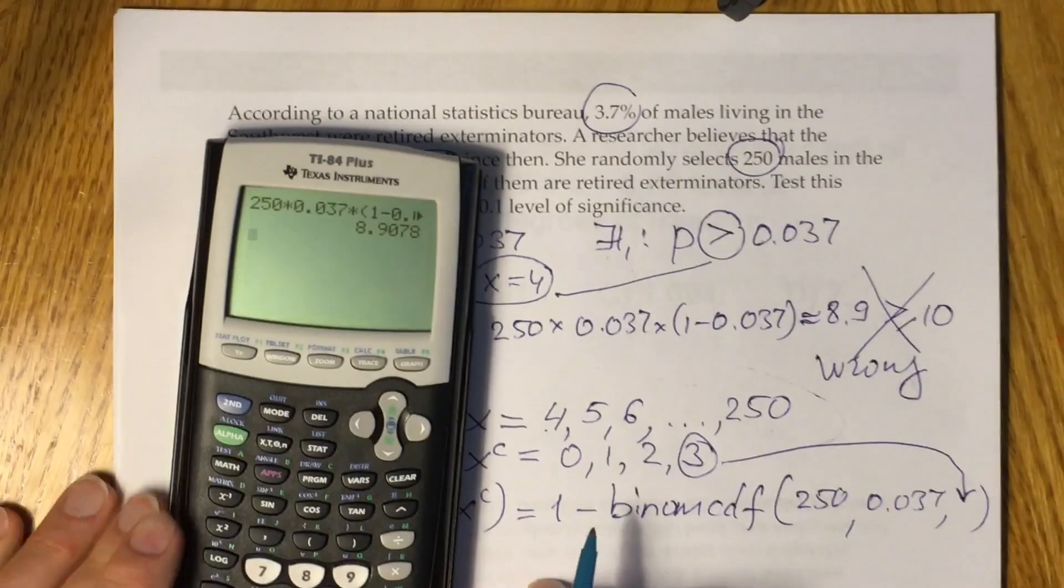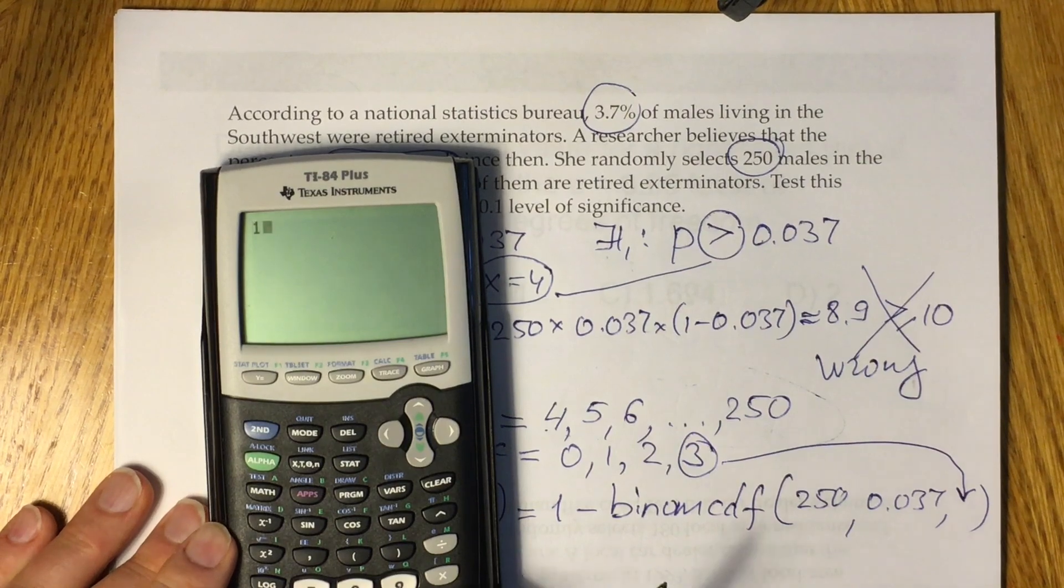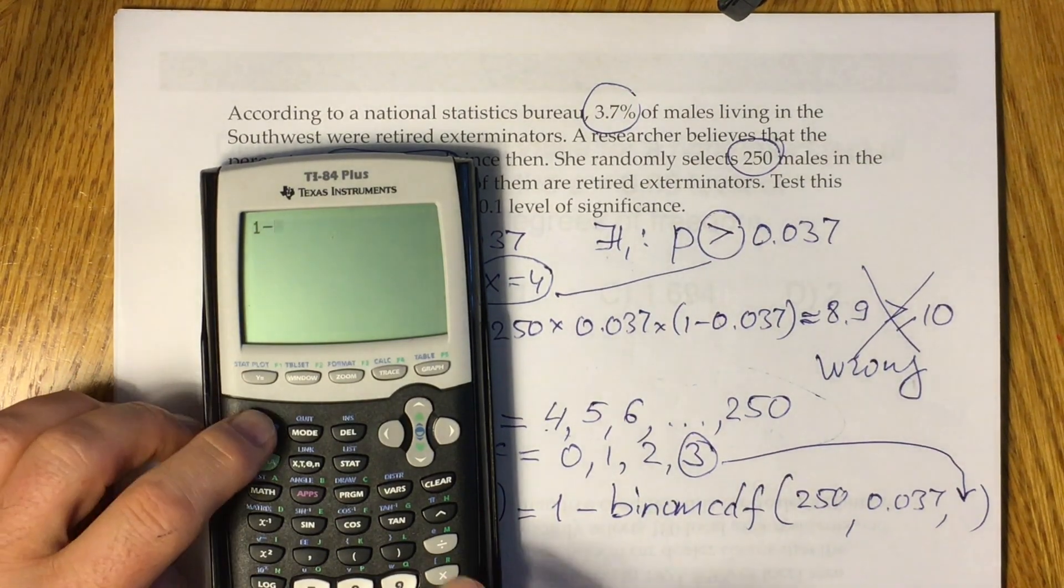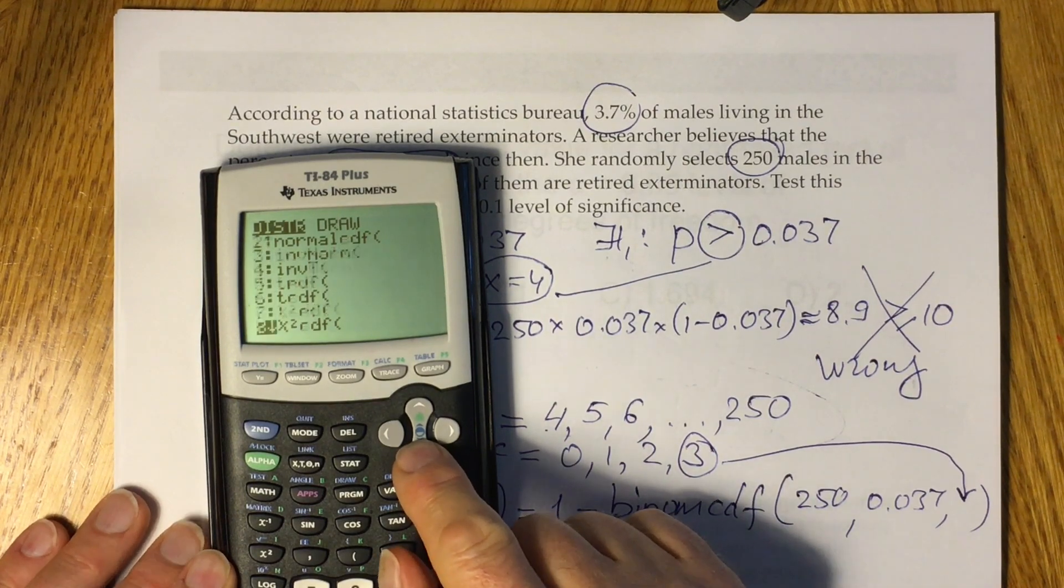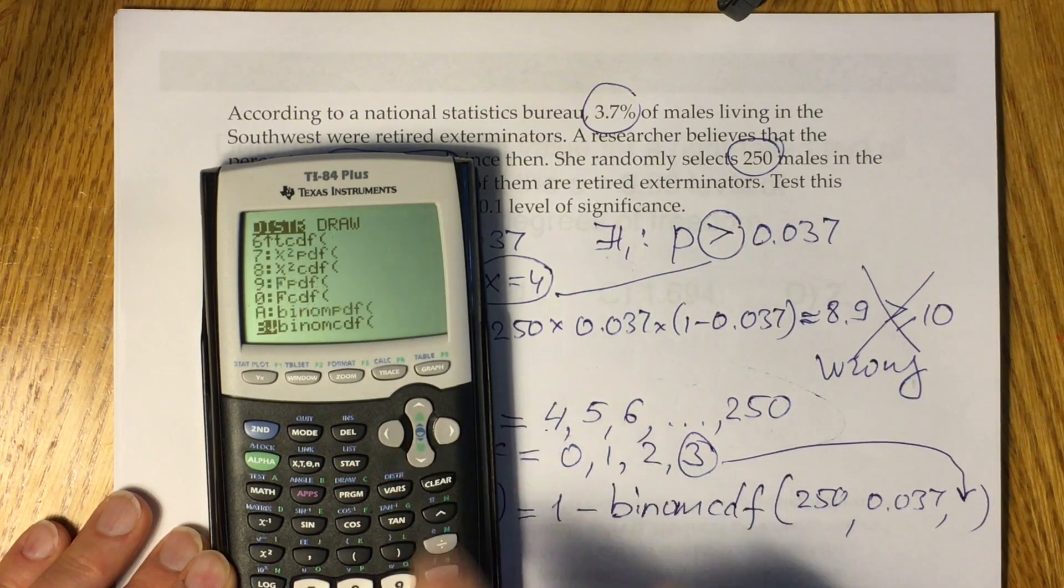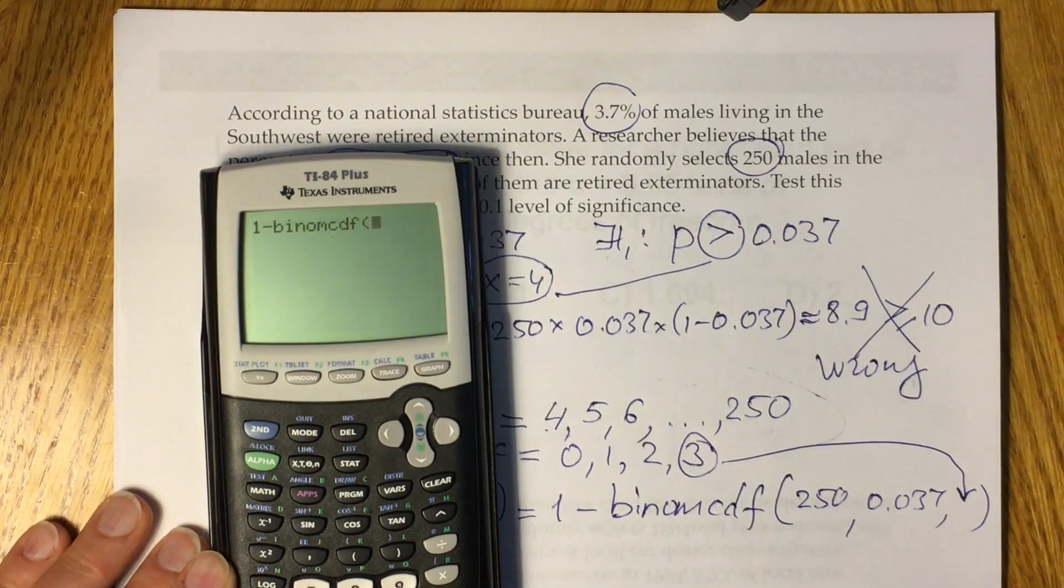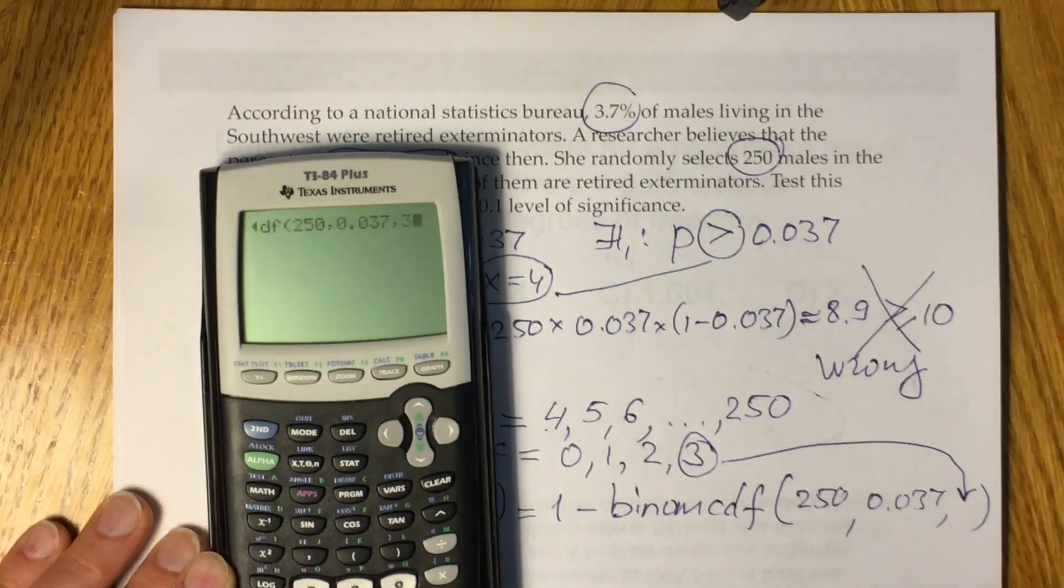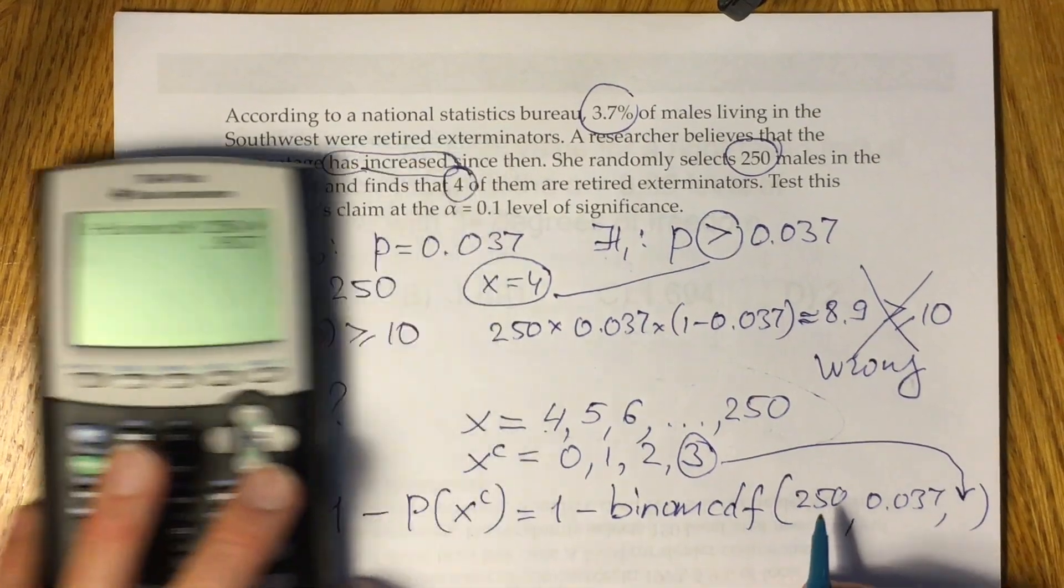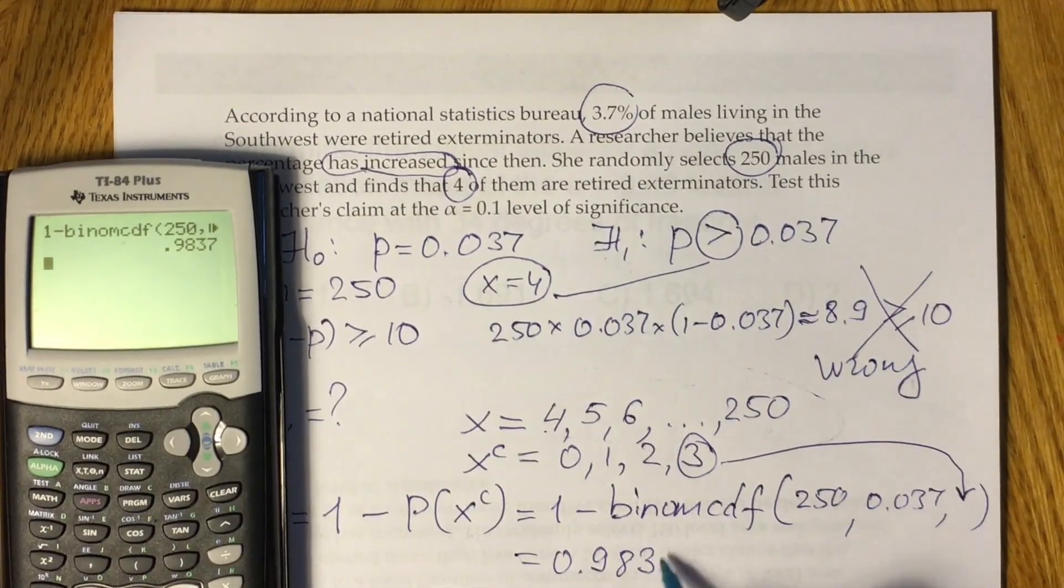To find this probability, you have to grab calculator. You have to put 1 minus, then second vars, pick up your binomcdf. So go down until you will see binomcdf, not binompdf, but binomcdf, in which you will put your n, 250, 0.037, and 3. Click enter. The answer would be 0.9837.